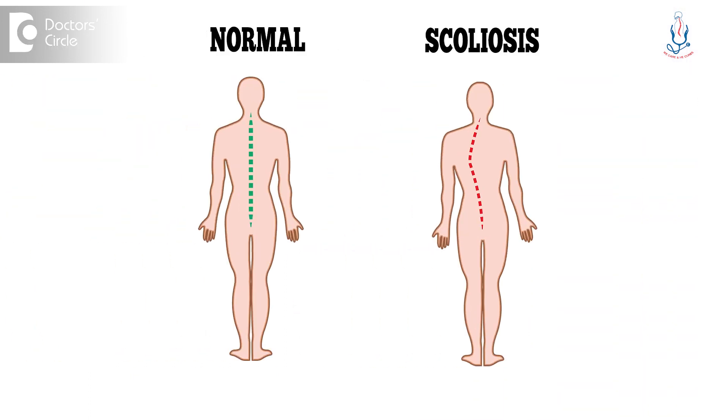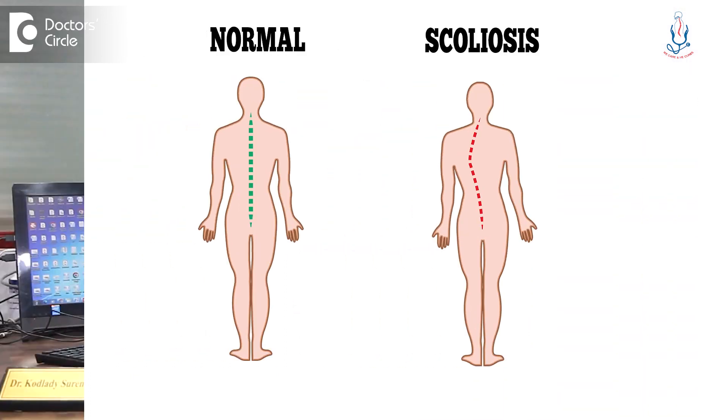Another type of curve is scoliosis. It is a curve in the coronal plane — the spinal column is bent in different degrees either to the left or to the right. That is called scoliosis.